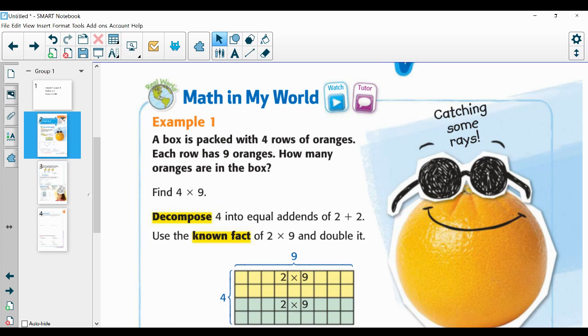A box is packed with four rows of oranges. Each row has nine oranges. How many oranges are in the box? So I know that I want to know the total number of oranges. If I've got equal groups, I could do repeated addition, but it would be faster to do multiplication. So I'm going to multiply. So I'm going to find 4 × 9.